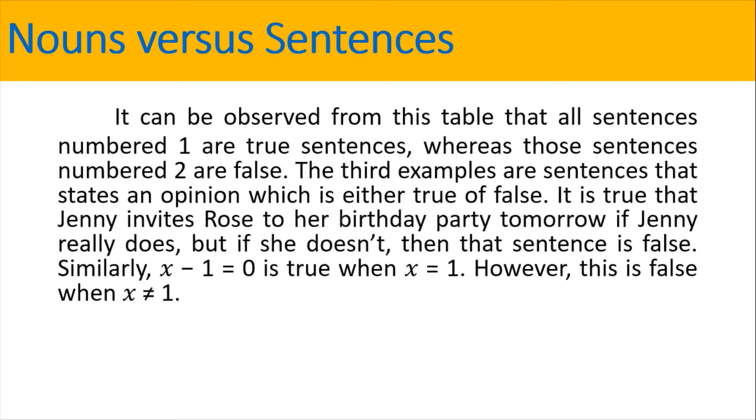It can be observed from this table that all sentences numbered 1 are true sentences, whereas those sentences numbered 2 are false. The third examples are sentences that state an opinion, which is either true or false. It is true that Jenny invites Rose to her birthday party tomorrow if Jenny really does. But if she doesn't, then that sentence is false.